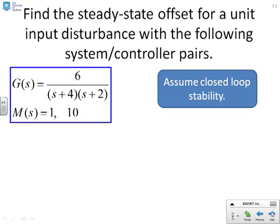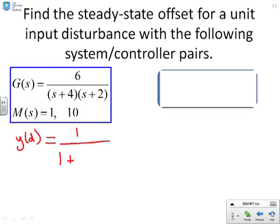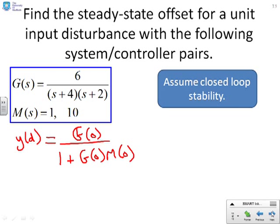A few more examples just to reinforce the point. Find the steady-state offset for unit input disturbance with the following system controller pairs. So what was the formula that we were looking at? Well, we had Y of D equals, and we had 1 over 1 plus, sorry, I've got that wrong. It's G of 0 over 1 plus G of 0 M of 0.